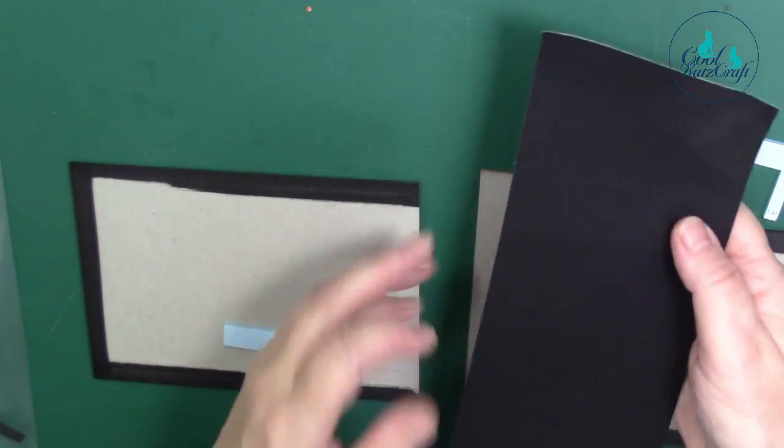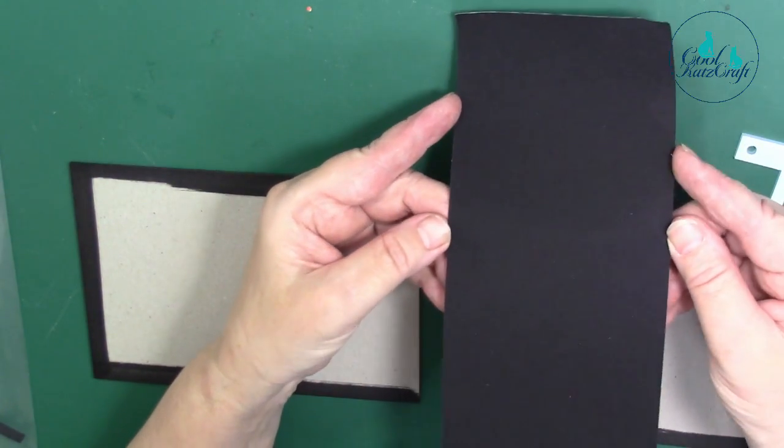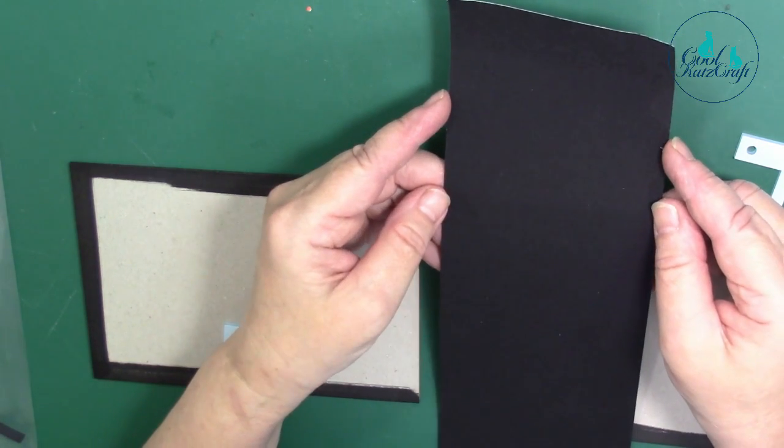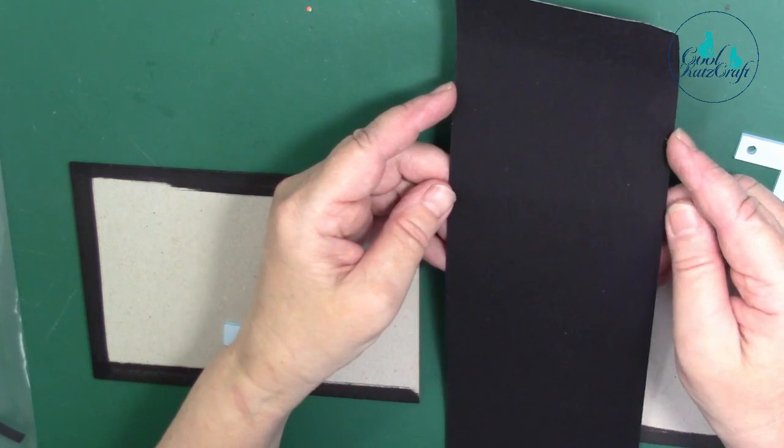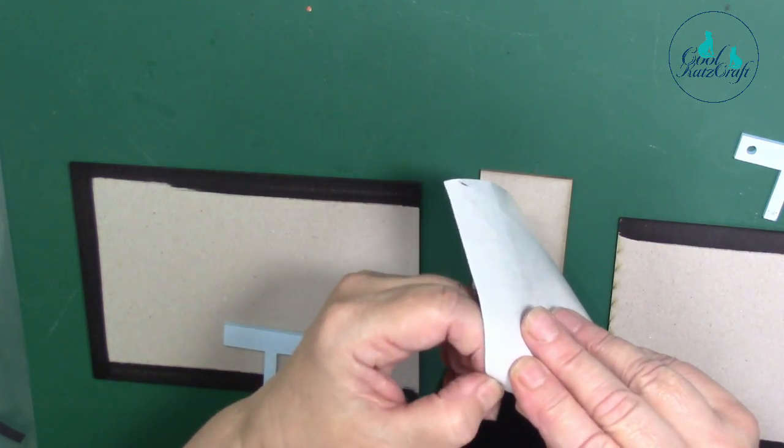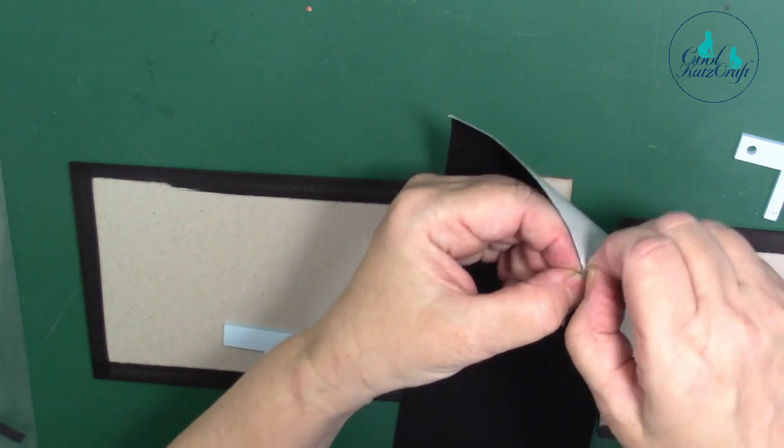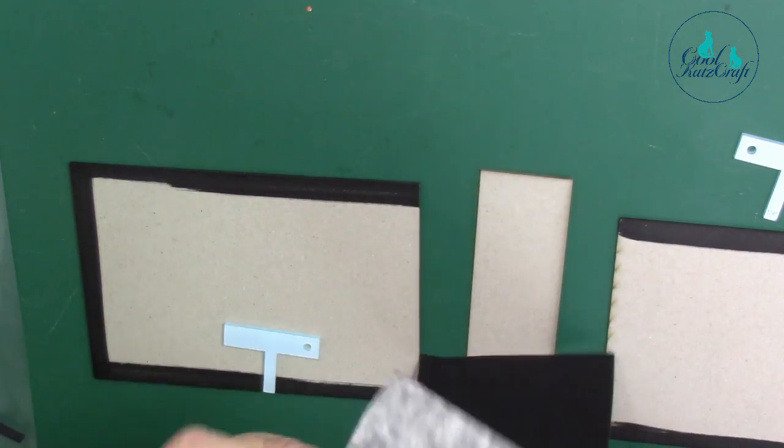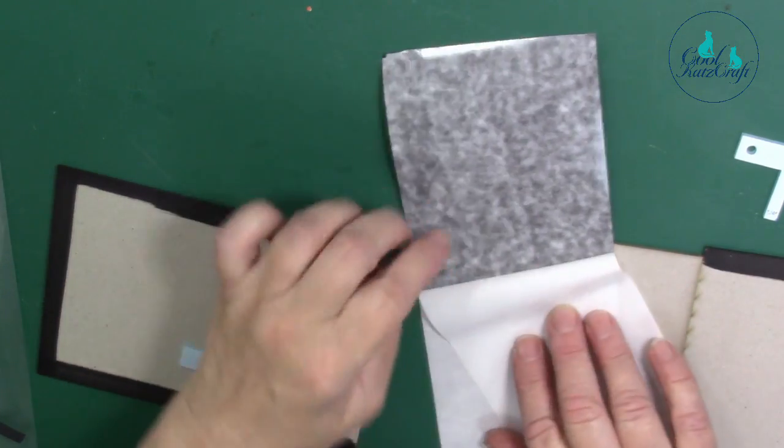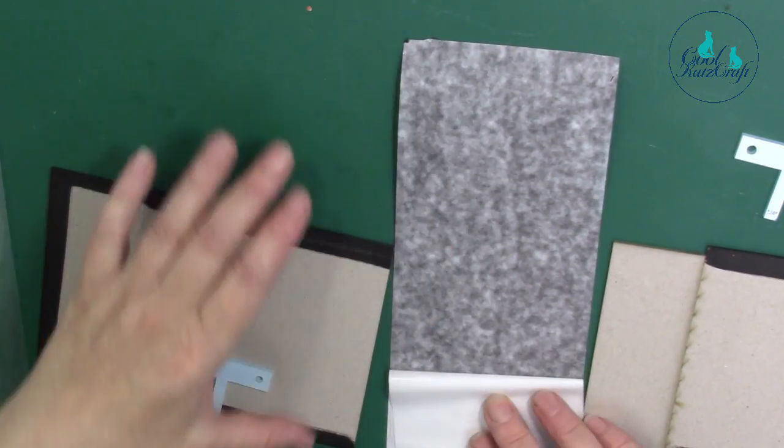This is our black Architape which is a cloth binding tape, so it's archival and acid free. This is a new width that we've got, it's 10 centimeters width, works brilliantly with smaller size albums. Just peel the back off. You've seen us do this lots of times but it's worth doing it if you haven't seen how this works before.